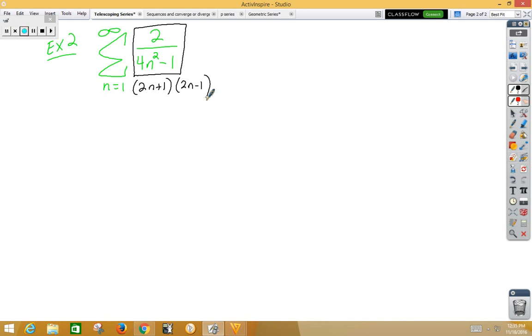Let's do partial fractions: A/(2n+1) + B/(2n-1). With a common denominator, we get A(2n-1) + B(2n+1) = 2. Choosing convenient values for n, if we choose n = 1/2, the first term becomes 0. Plugging this in, we get 2B = 2, so B = 1.